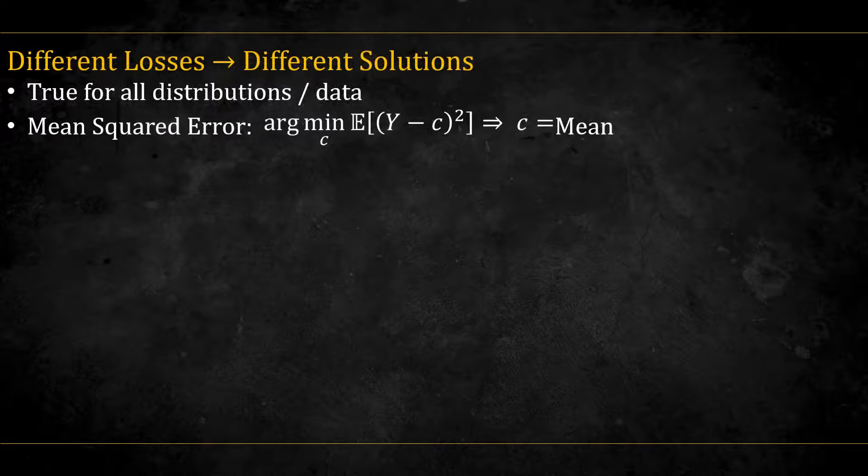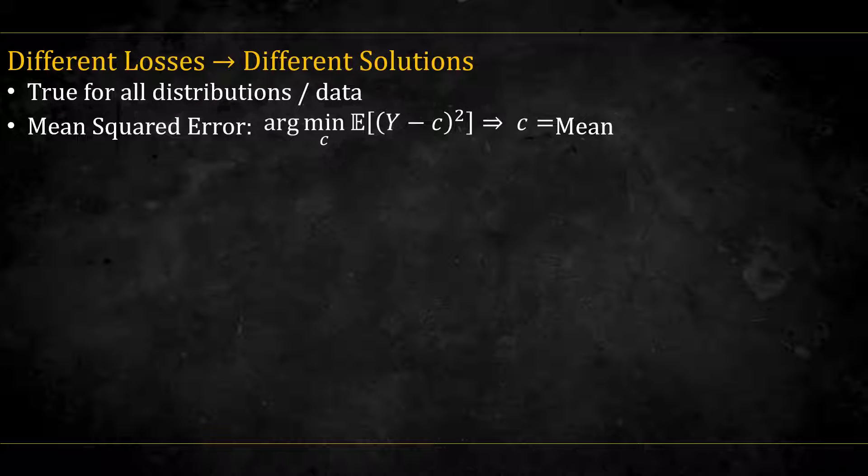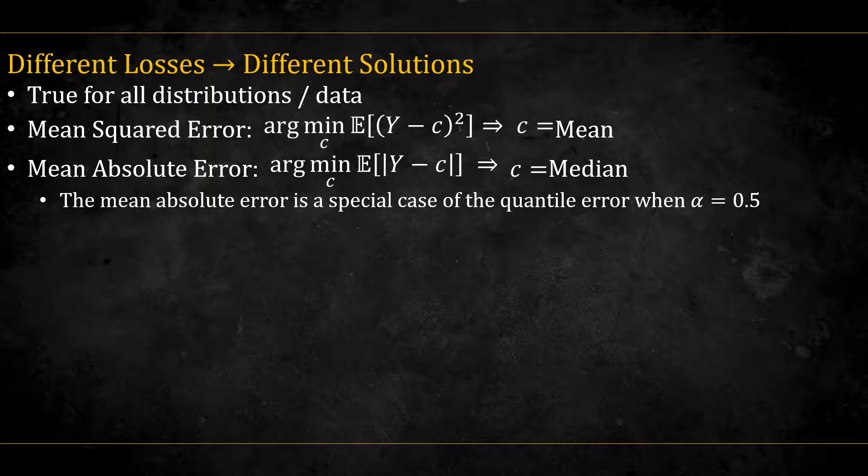The squared error, for example, used by linear regression, gives rise to the mean when y is a random variable coming from some distribution. The absolute error gives rise to the median.